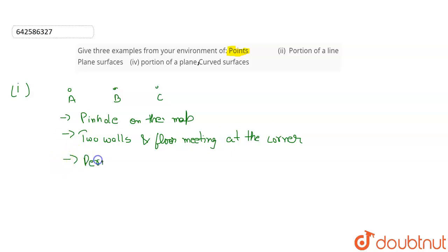Now the last one we have is period at the end of the surface. Any surface is having an end part and that surface can be referred as a point also. So these are the examples of points.